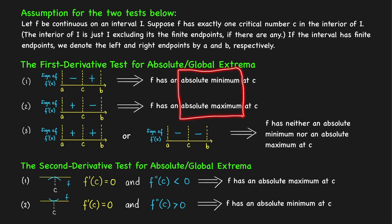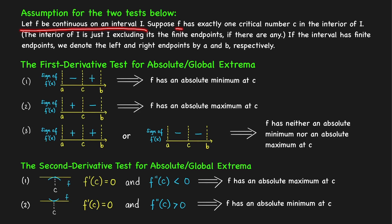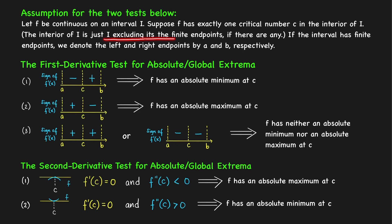So what is that additional condition? Here's the assumption for the following two tests. Suppose we have a function that is continuous on an interval I, and that this function f has exactly one critical number in the interior of I. When we say interior of the interval, it is just the interval I excluding its finite endpoints, if there are any.